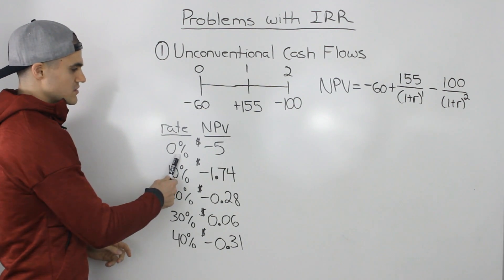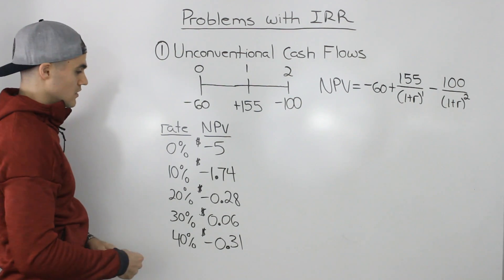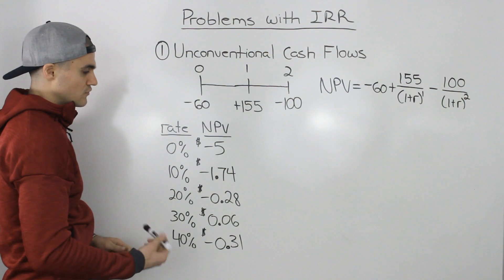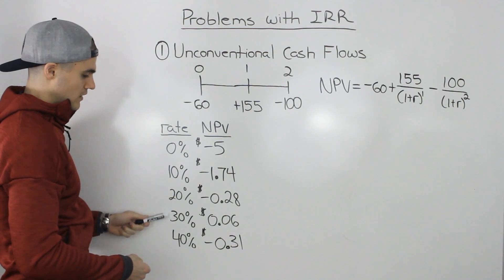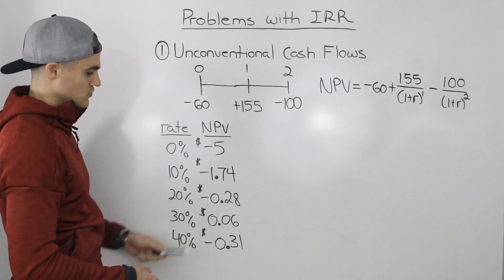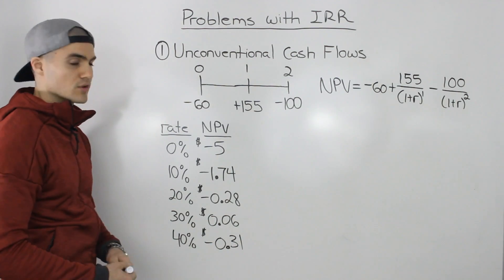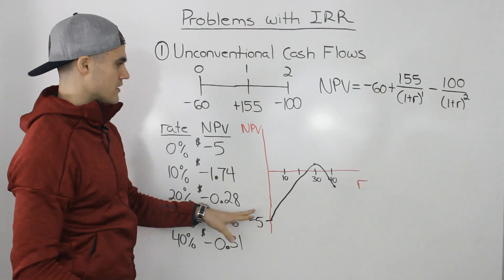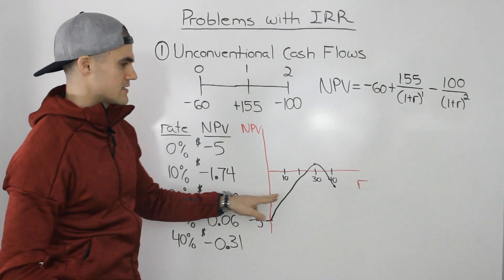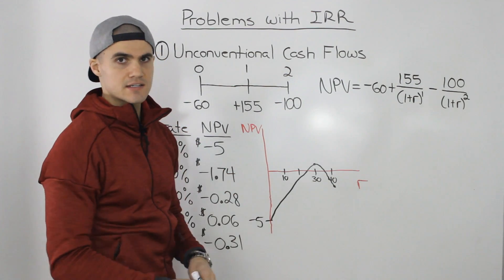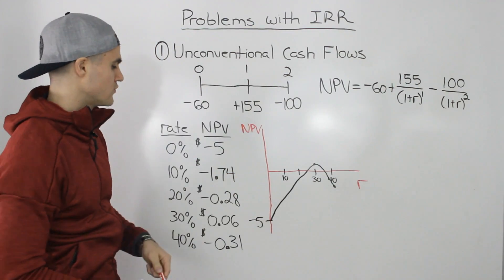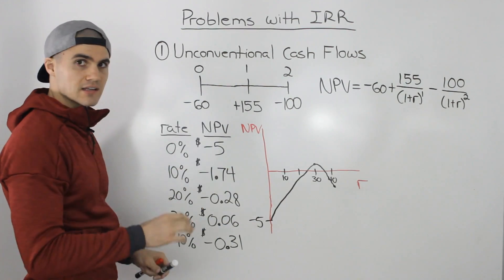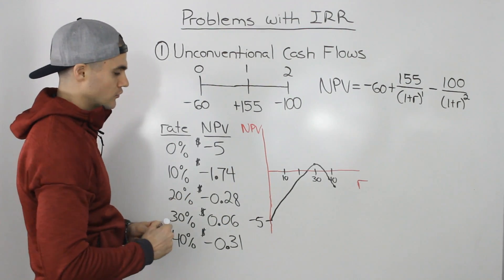At a discount rate of 0% the NPV is negative $5. At 10% it's negative $1.74, and then at 20%, 30%, and 40% we get negative $0.28, positive $0.06, and negative $0.31 respectively. If we graph this with NPV on the y-axis and discount rate on the x-axis, as we did in the overview video, we get a shape that's a little different from before.